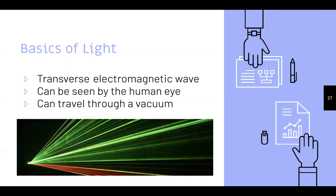The basics of light: light is a transverse electromagnetic wave — we'll dissect that further — and it can be seen by the human eye. You see light all the time when you turn on the lights. Light can also travel through a vacuum.